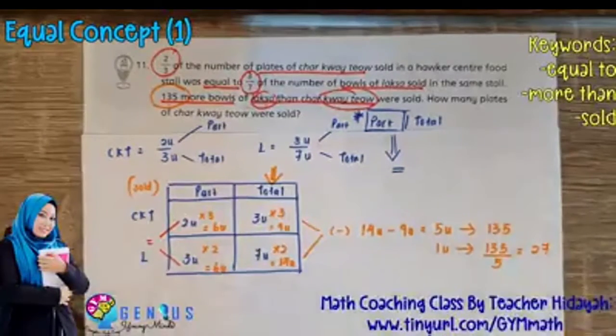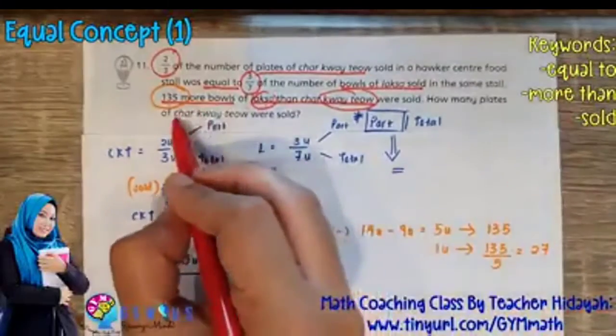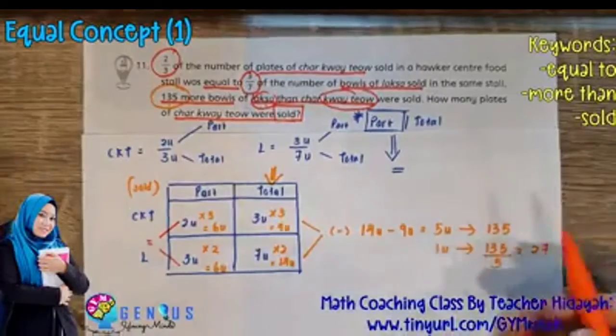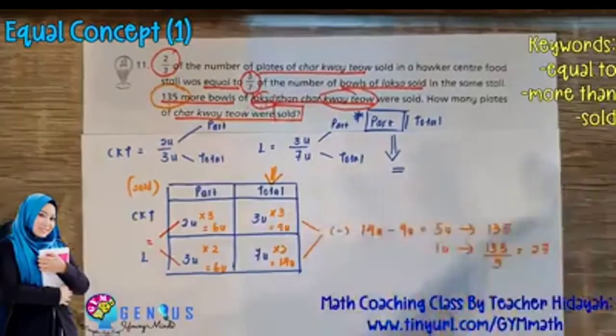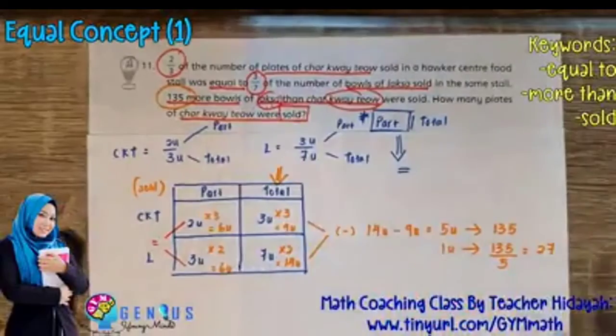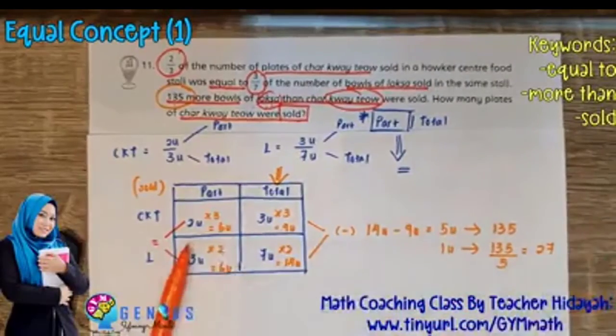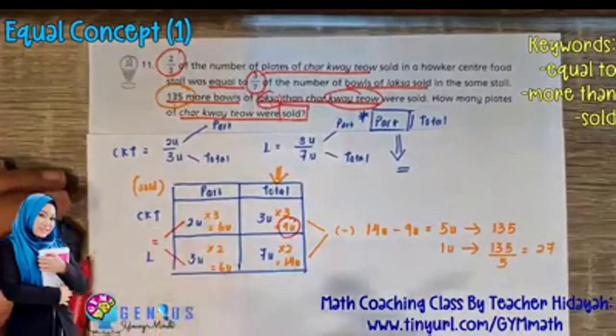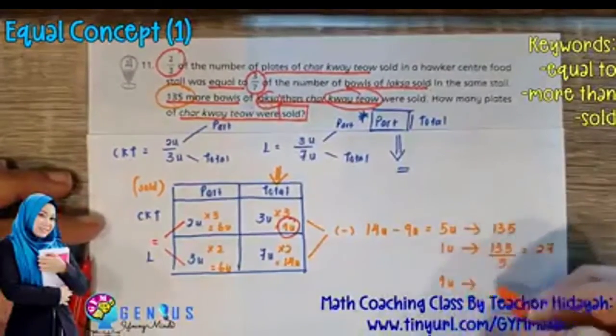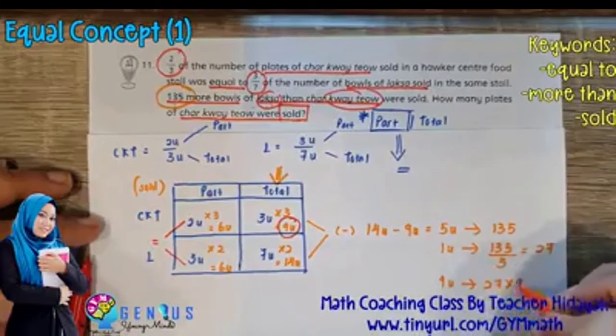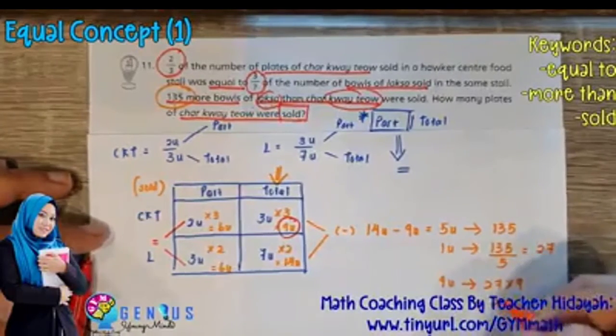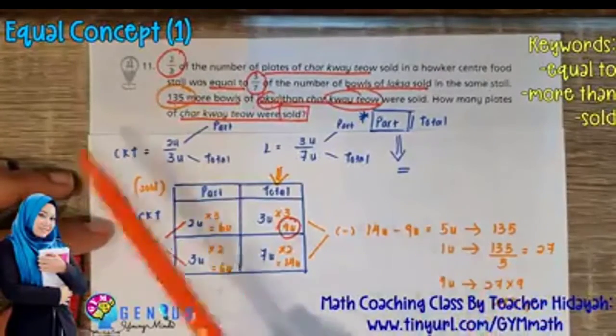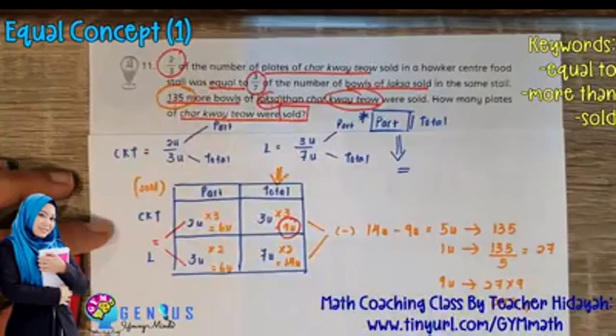So I want to know how many plates of Cha Kuei Tiao were sold. So if I want to know that are sold, total number that are sold, you look at the Cha Kuei Tiao total. So this will be 9 units. So I go and find 9 units will be 27 times 9. And this will give me 243. And that's the answer. So this is an equal concept question that involves fractions. Alright.